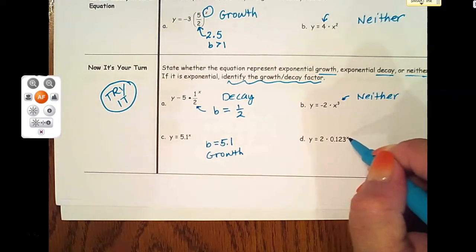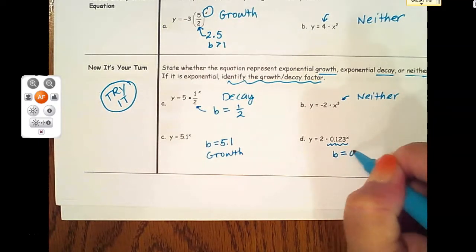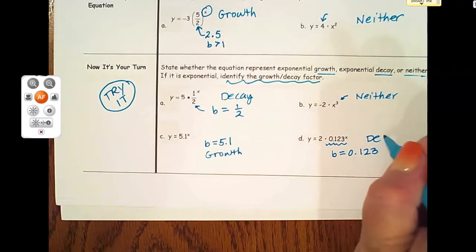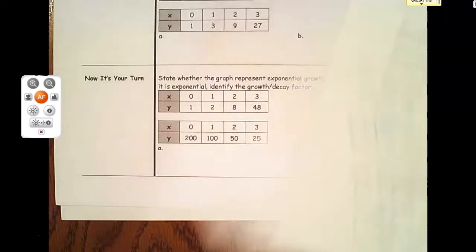In the last one, I have an x for my exponent so I know it's exponential. b is 0.123, which is definitely between 0 and 1, so I am looking at a decay formula here.